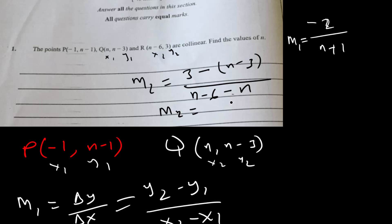x2 will be -6 minus x1 which is n. So my m2 here will be 3 minus n + 3 over -6 minus n, which simplifies to 6 - n over -6.